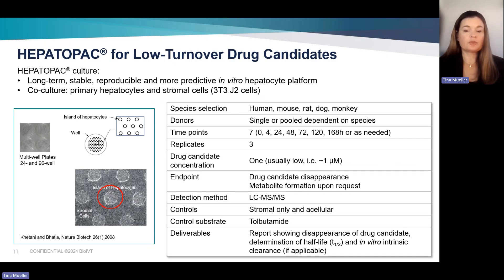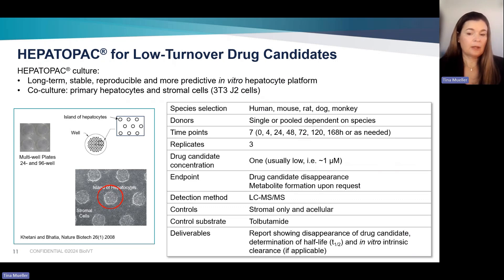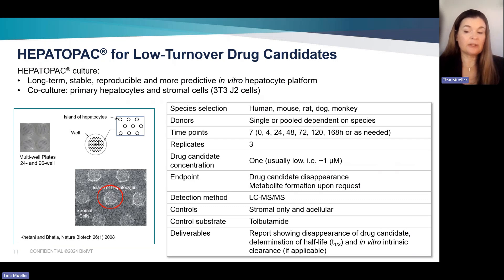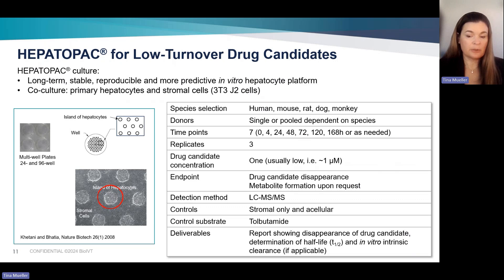Let me take a quick side tour and introduce one of the alternative test systems for low turnover drug candidates, because metabolic stability for these compounds has often been challenging to evaluate. That test system is HepatoPac. HepatoPac cultures are long-term, stable, and reproducible test systems for low turnover drug candidates, and the results are more predictive than when typical incubations in suspension hepatocytes are used. If a compound does not show disappearance after two to four hours incubation in hepatocytes, HepatoPac is a great alternative.